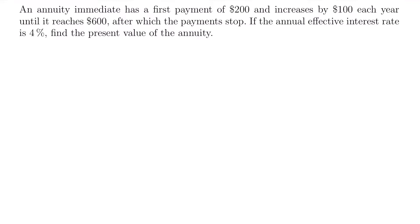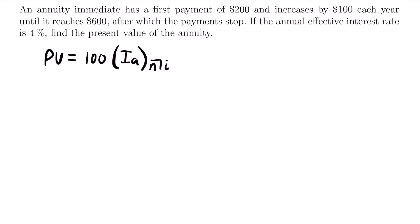Notice something a little different about this problem compared to our previous one. Here, the first payment is an amount different from the amount the payments increase by. In our previous example, Samuel's initial deposit of $7 matched the $7 increase — the initial payment matched the increment. That is not the case here: our first payment is $200 but payments increase by $100. So we'll have to calculate this in a different manner — it's not simply 100 times the arithmetic increasing annuity notation.